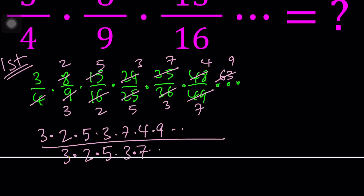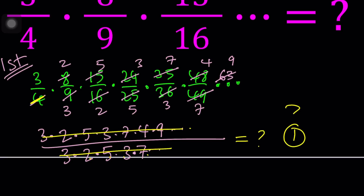We have the 3, the 2, the 5, the 3, and the 7 — there was nothing left here. All these terms are going to cancel out, and all these terms are going to cancel out. Wait a minute — are we going to get 1 because everything cancels out? I don't know. Something should be left over but nothing seems to remain. So maybe the answer is 1? Let's put a question mark because we're not sure yet, and I'll still show you the second method.